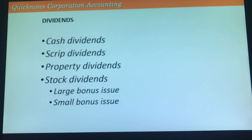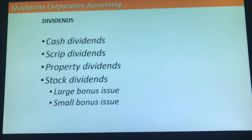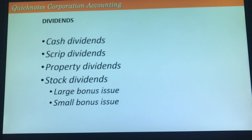Stock dividends have two kinds: large stock dividend (large bonus issue) and small stock dividend (small bonus issue). A small bonus issue is 1 to 19 percent, while 20 percent and above is a large bonus issue. For a small bonus issue, we debit retained earnings at the fair value of each share. For a large bonus issue, we debit retained earnings at par value only.